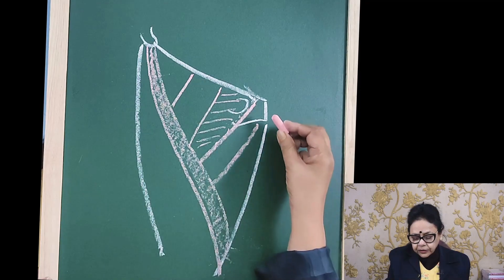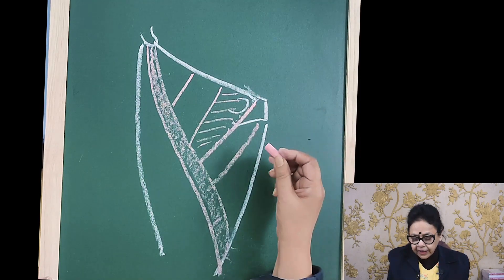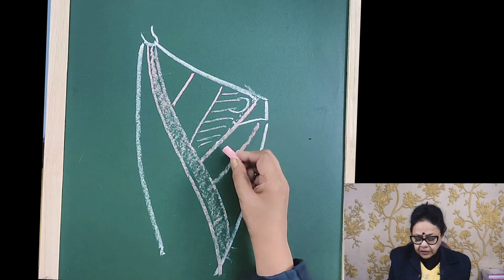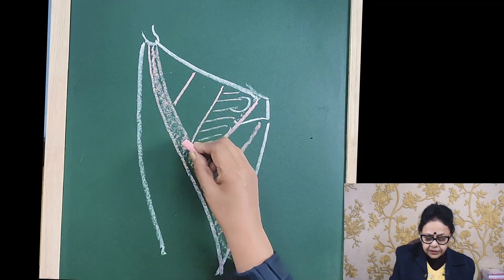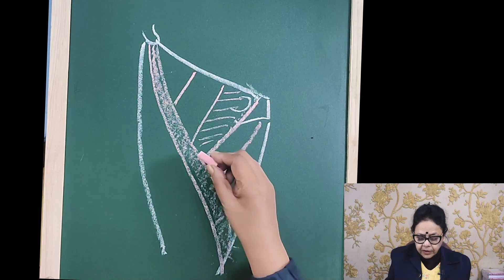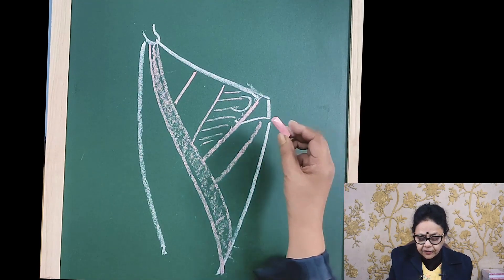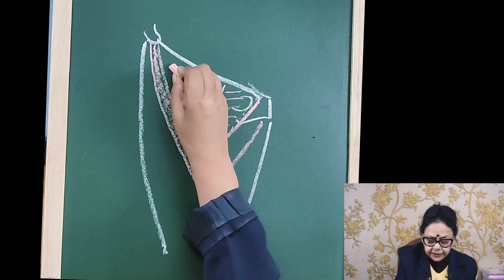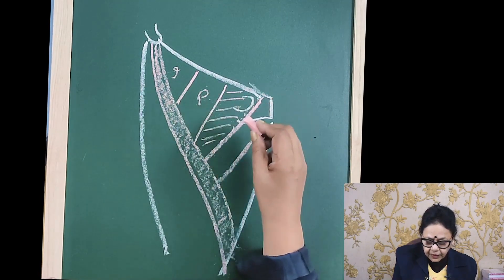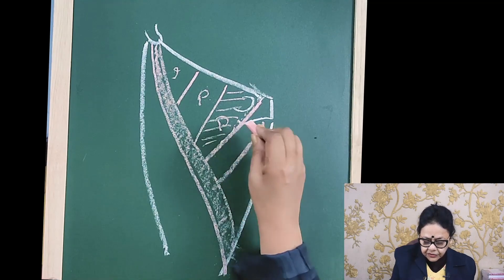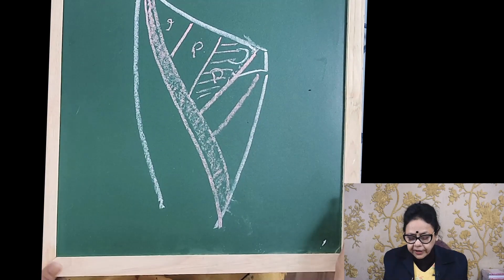This is the base of the femoral triangle formed by the inguinal ligament and the adductor longus forms the medial boundary. The lateral boundary is formed by the upper part of the sartorius and floor is formed by iliacus, psoas and the pectineus. So this is the femoral triangle.